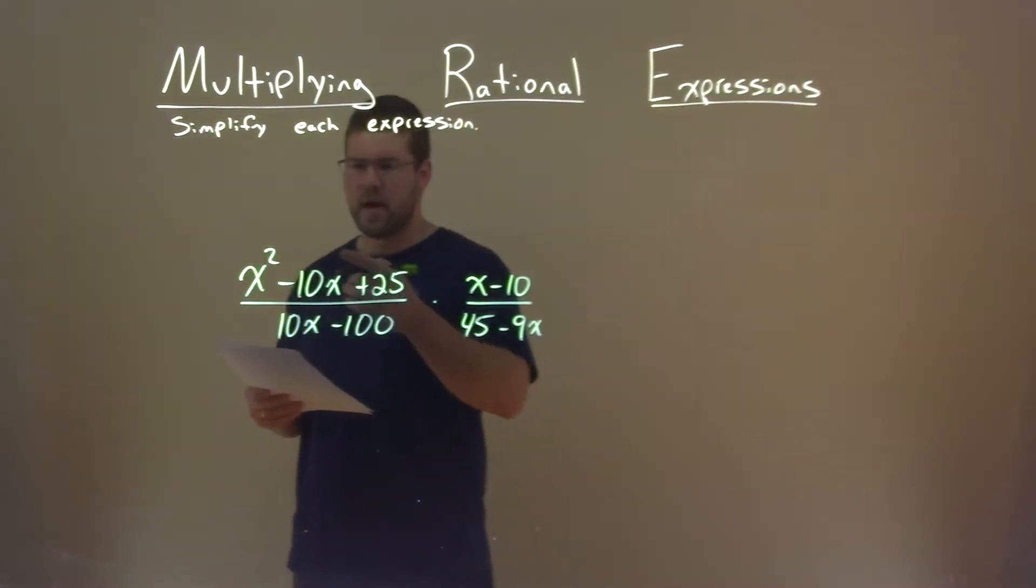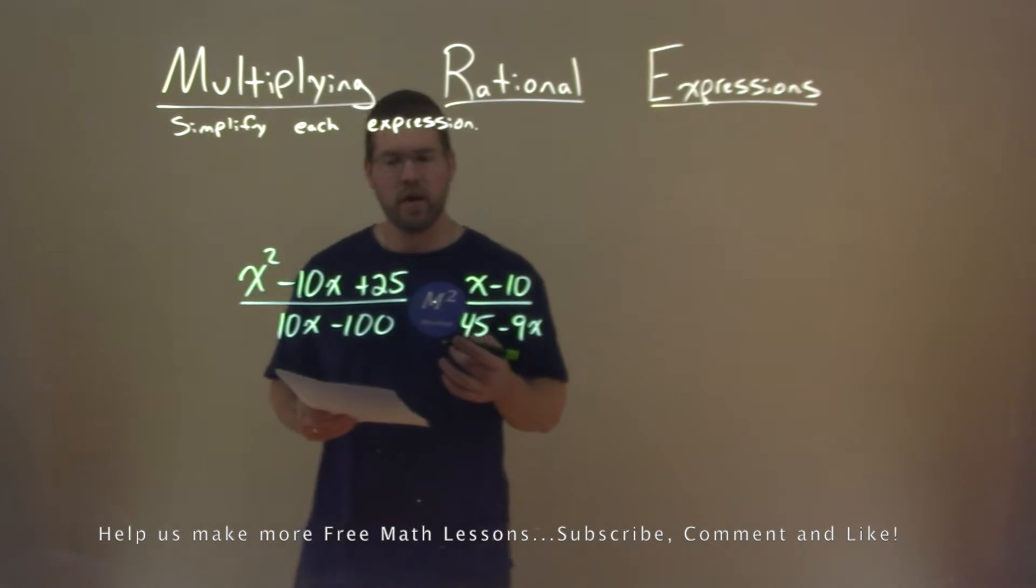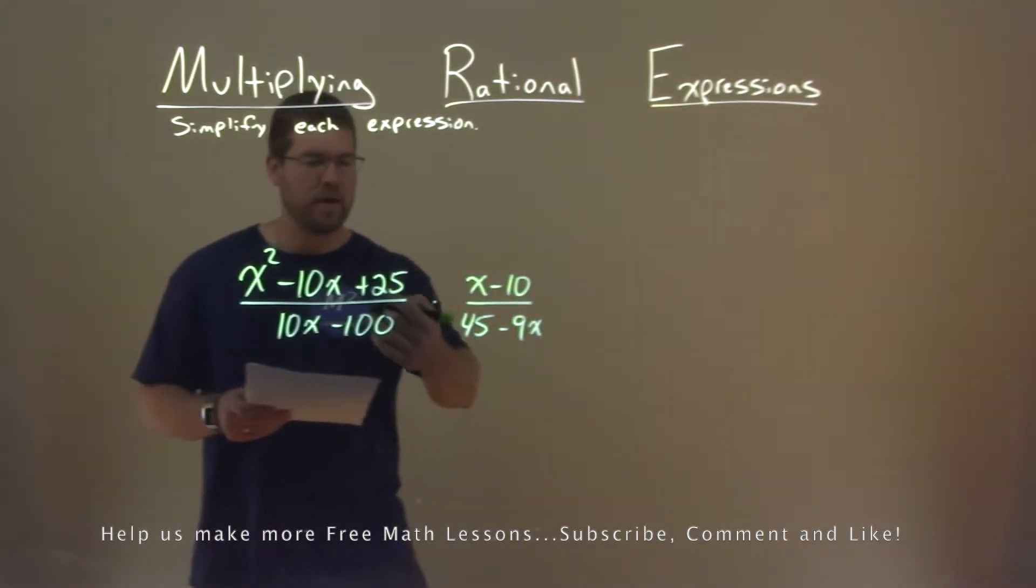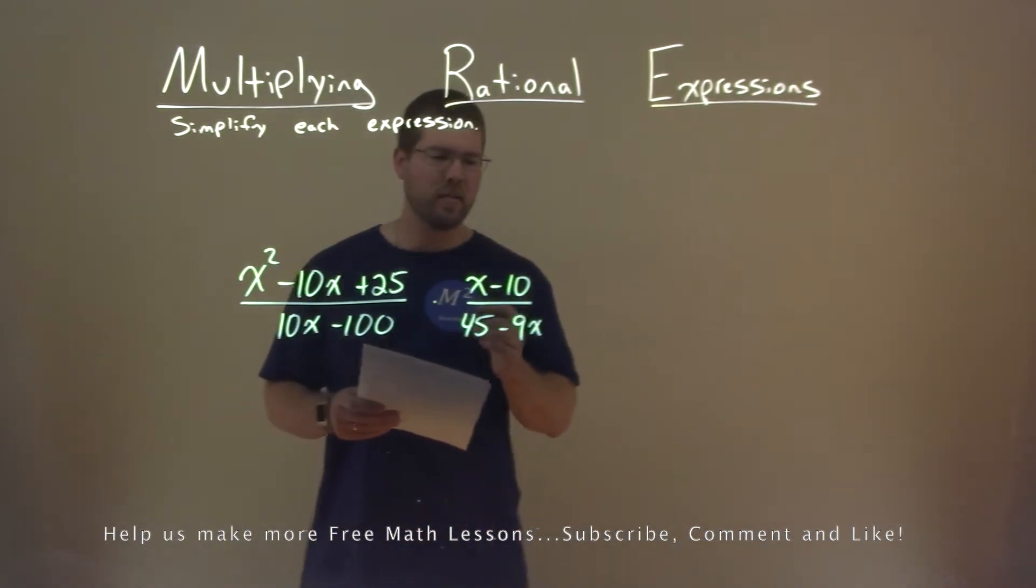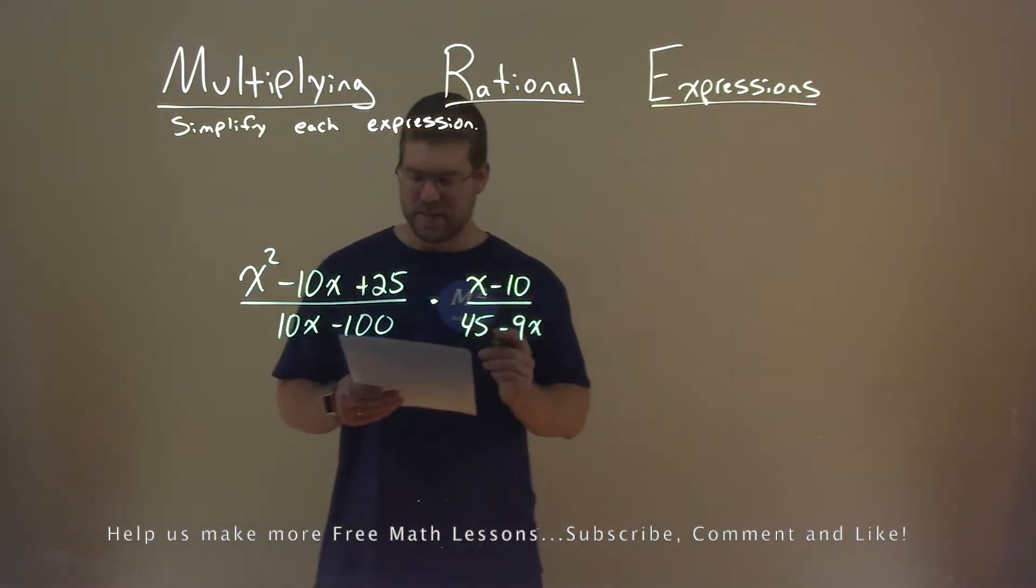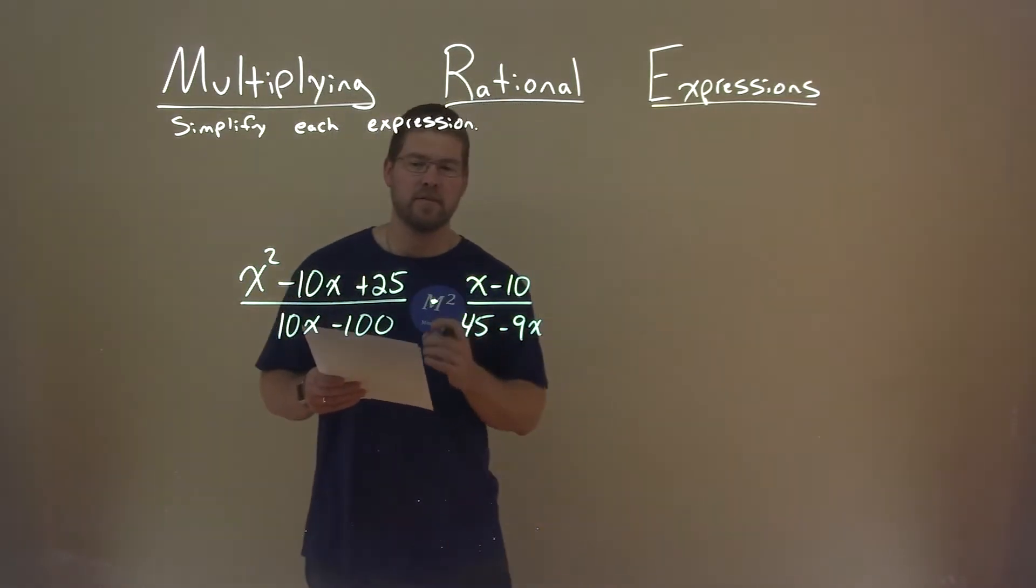We're given this problem right here: x squared minus 10x plus 25 divided by 10x minus 100 times x minus 10 divided by 45 minus 9x. And we want to simplify this expression.